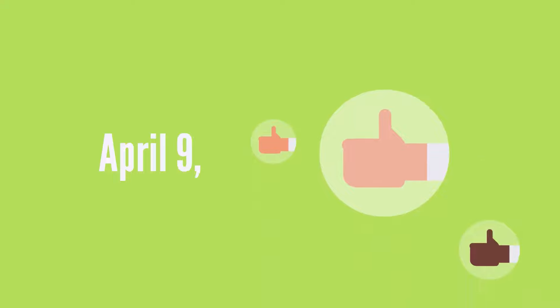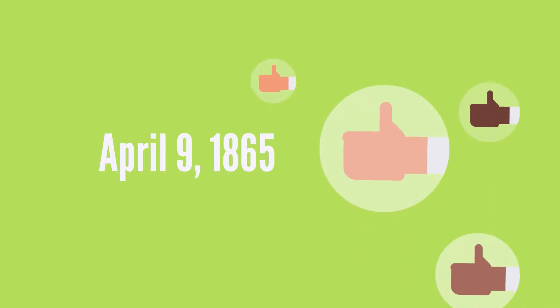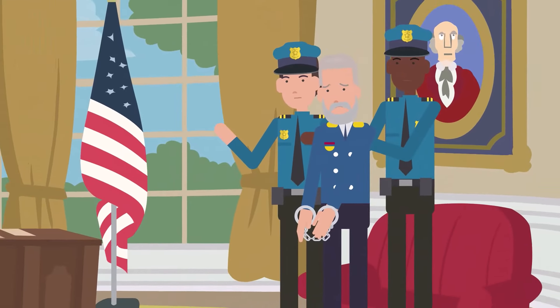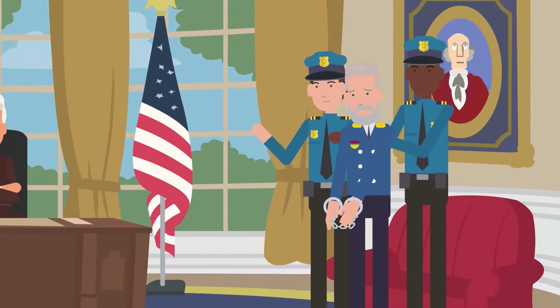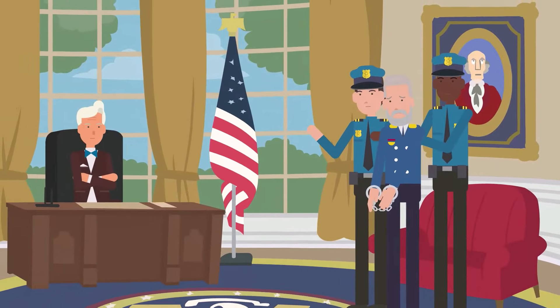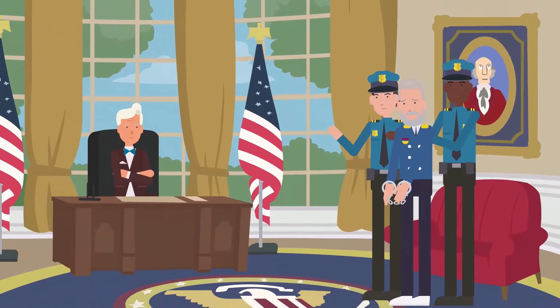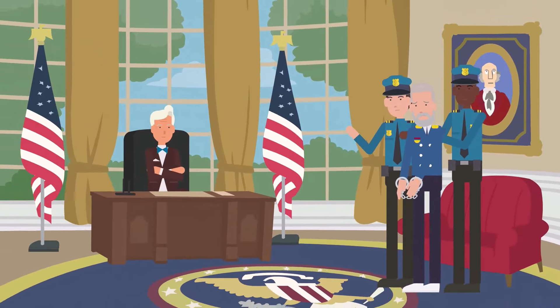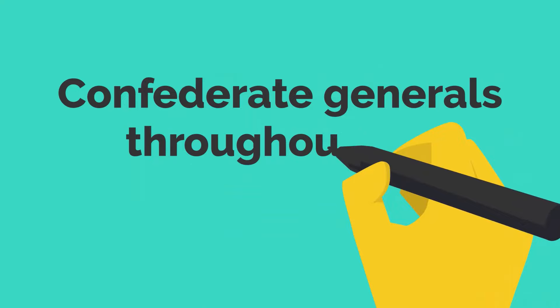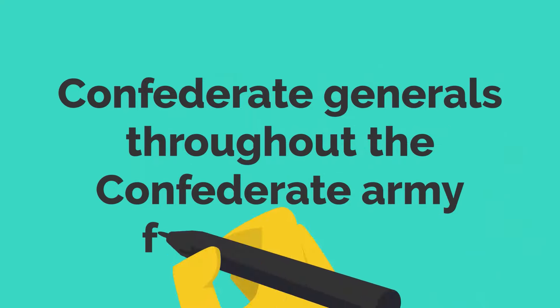Confederate General Robert E. Lee surrendered to Union General Ulysses S. Grant at the Battle of Appomattox Courthouse. Confederate generals throughout the Confederate Army followed suit.